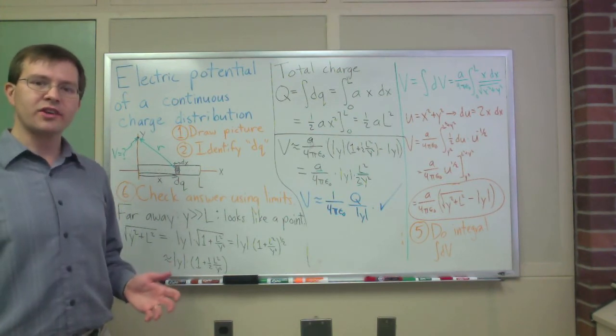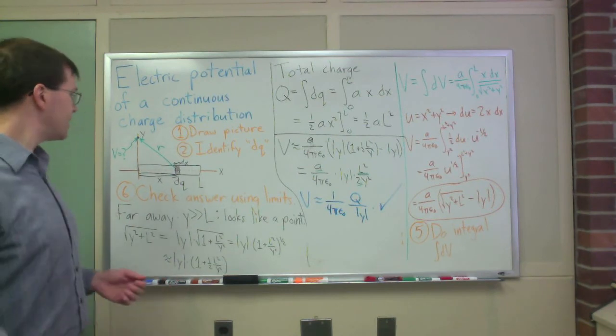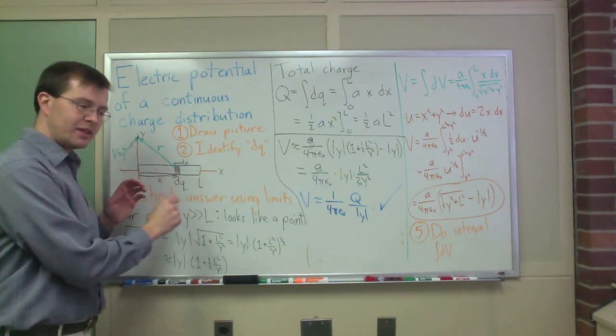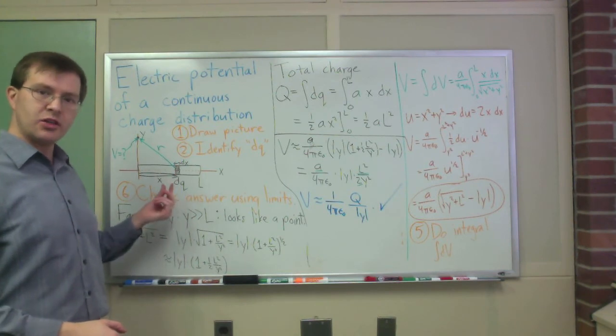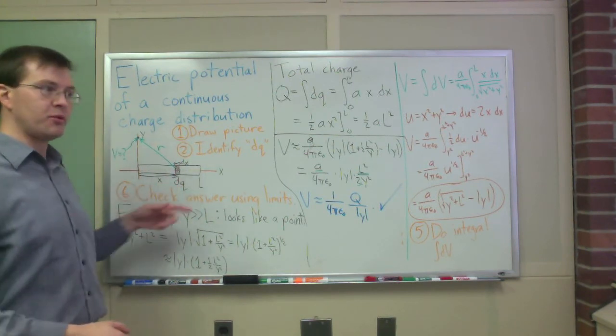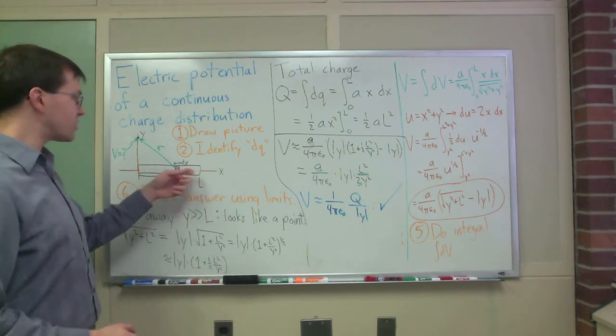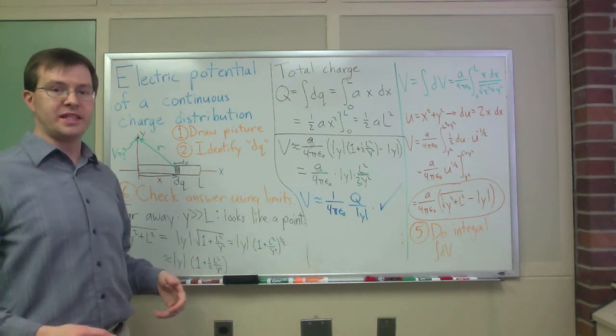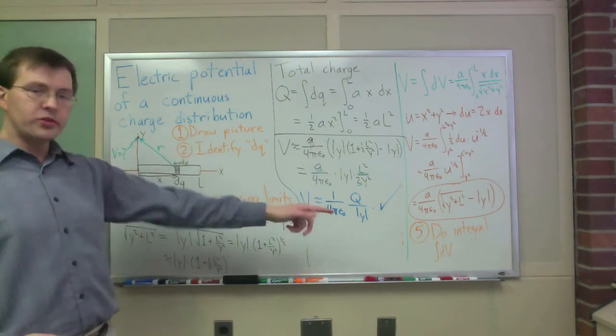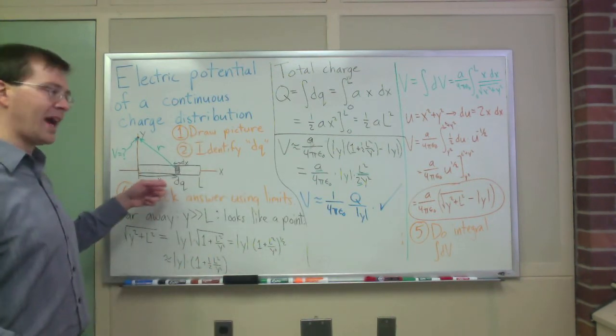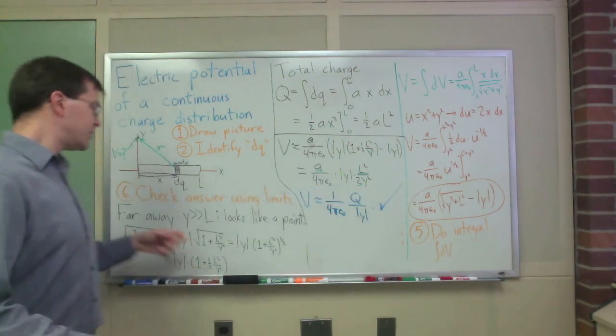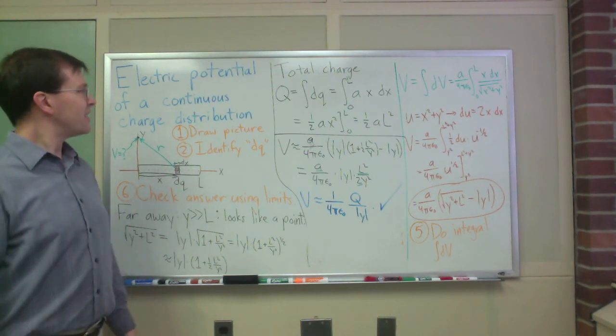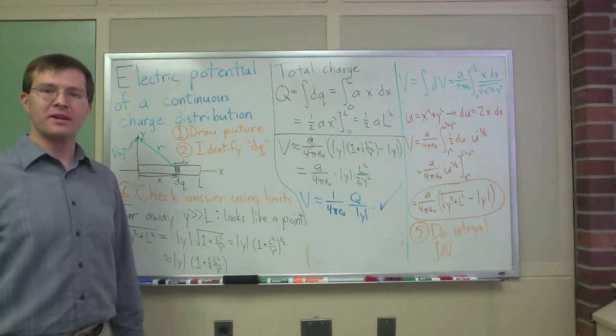So again, the steps you use to solve a continuous charge distribution problem for potential like this. First, you draw a picture, break up your charge into little pieces, little pieces dq, then write that dq in terms of the geometry. Write your dq in terms of geometry. If it were a circular thing, maybe you could write dq in terms of d theta. Then write dv in terms of dq. If you're doing an electric field, you could write d E vector in terms of dq. Do the integral once you know how to write all those things in terms of your variable x. And once you've got an answer, check it using some limits. Always do those last checks, because they'll give you insight into the problem, and they'll make sure you haven't made any silly mistakes. That's how you do continuous charge distribution problems, and I hope it's useful to you.